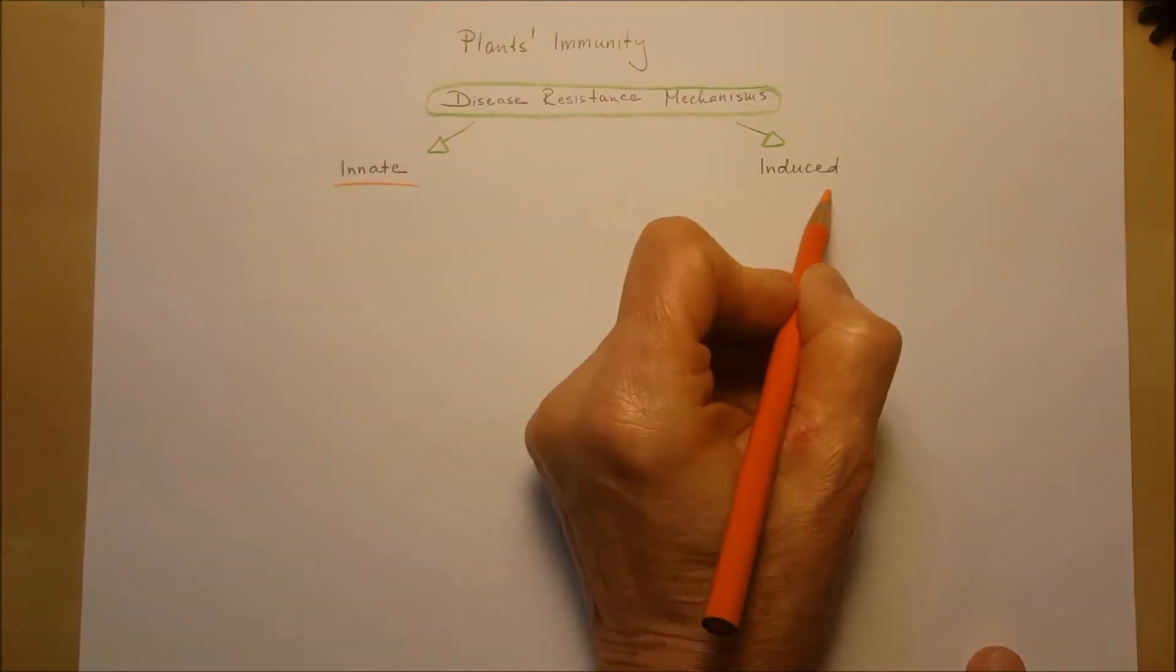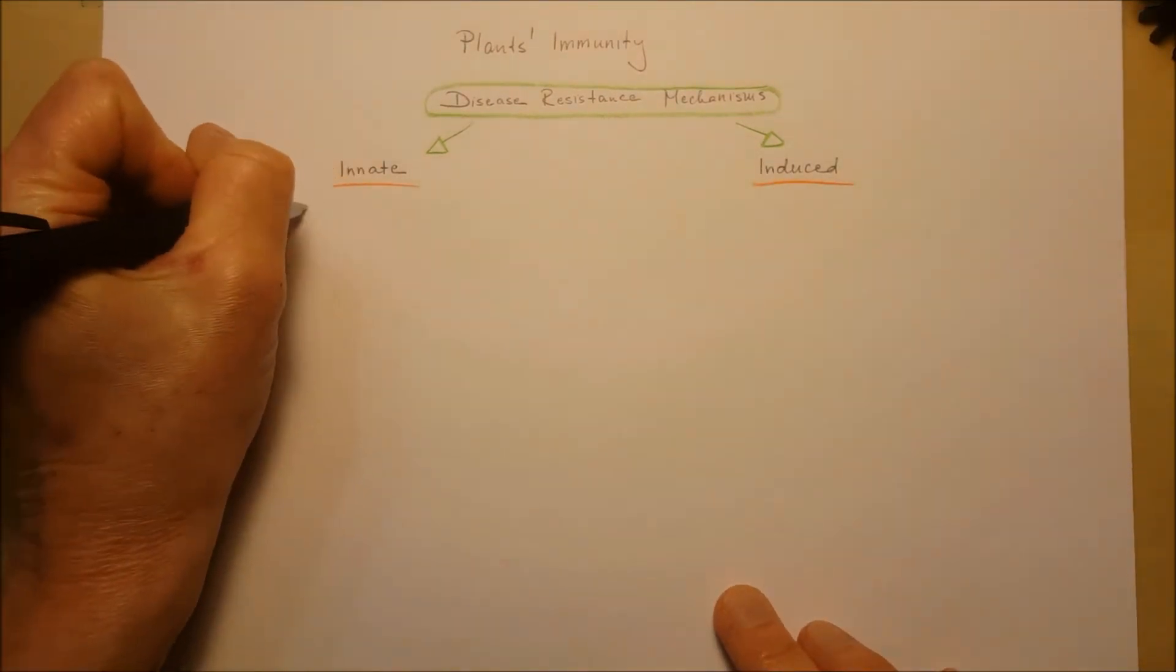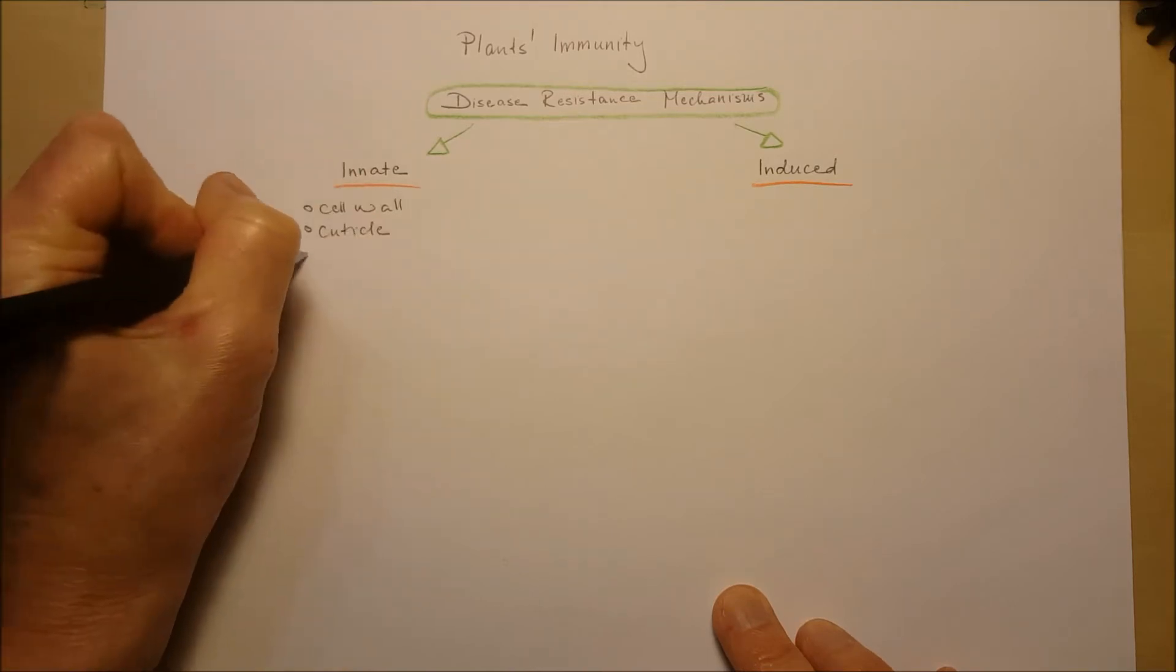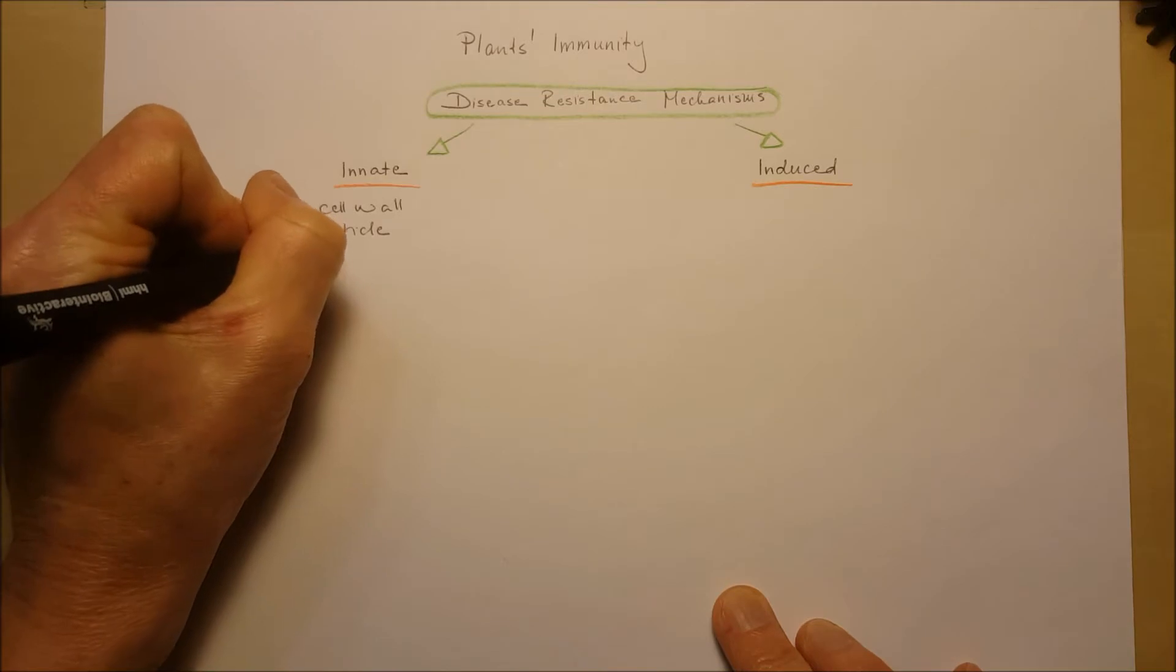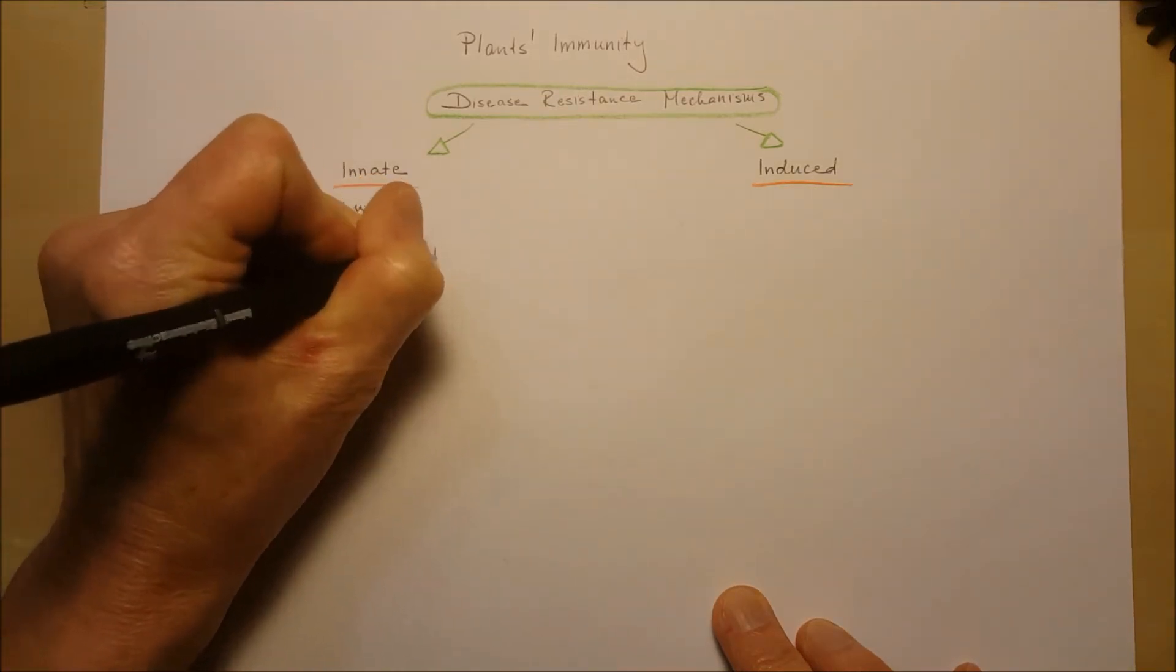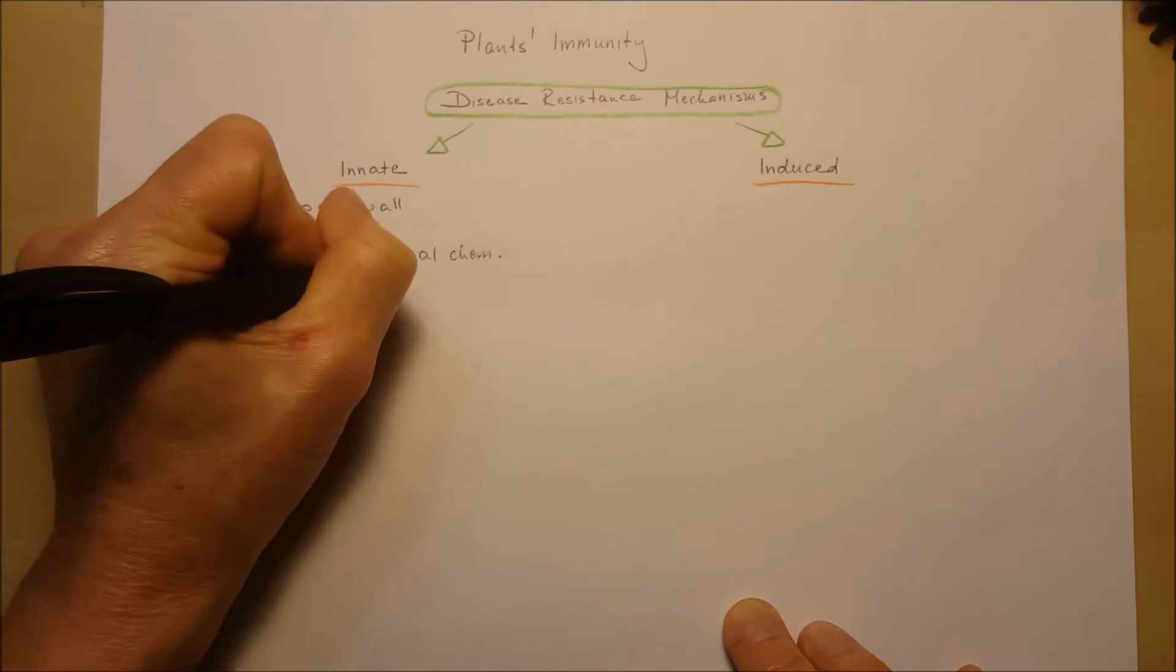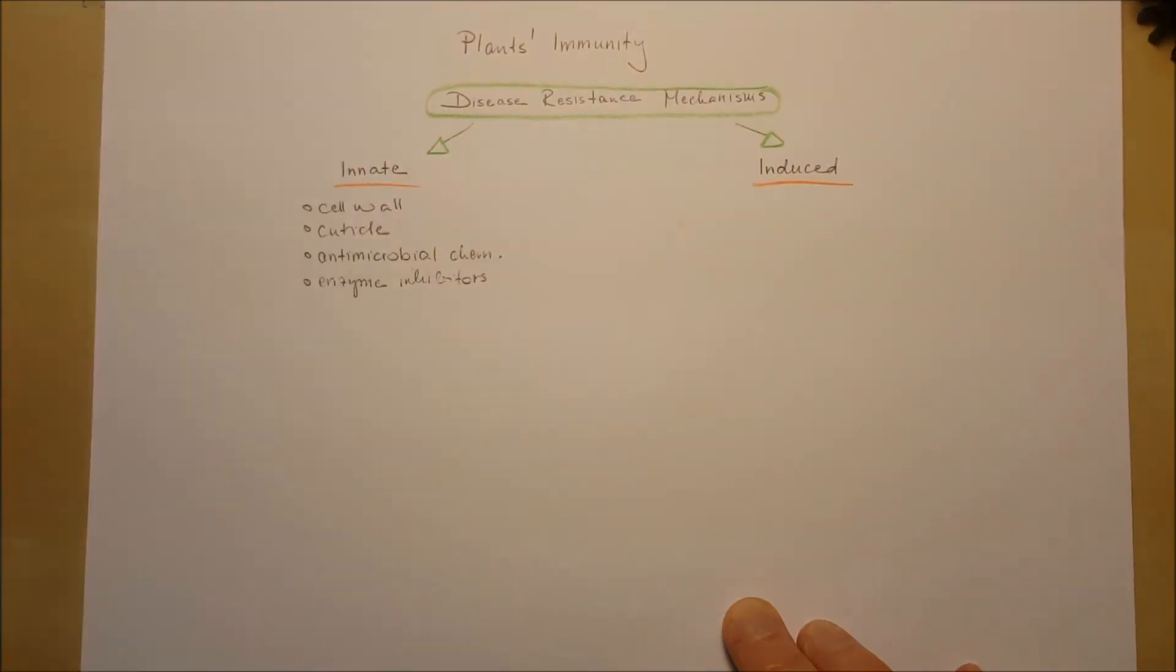The innate structures and chemicals are the cell walls made out of cellulose, the cuticle, the waxy material that not only stops water loss but stops pathogens from entering the leaf, antimicrobial chemicals like nicotine that naturally occur in some plants, and enzyme inhibitors that inhibit the growth of pathogens.